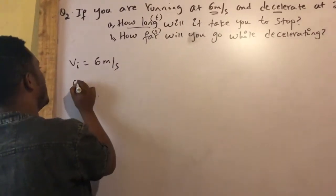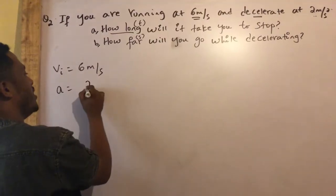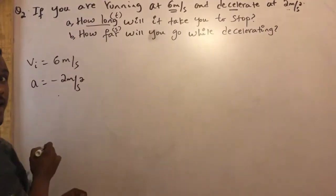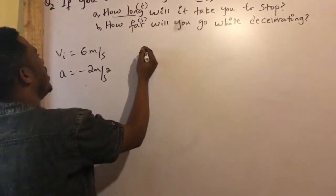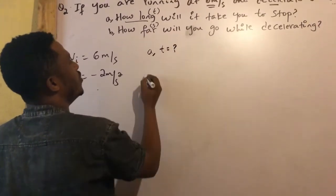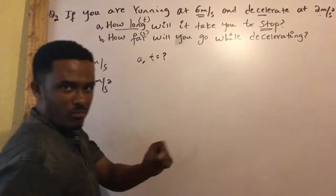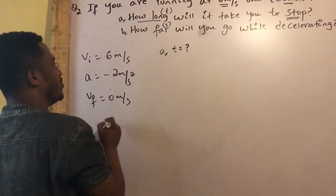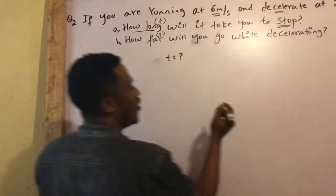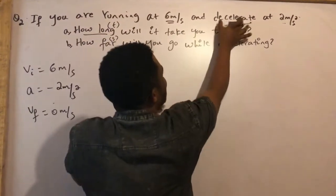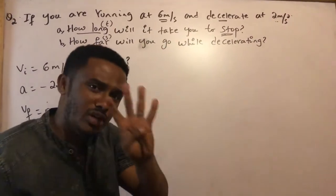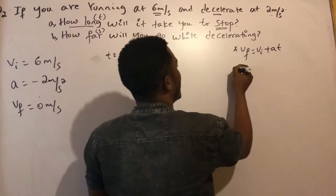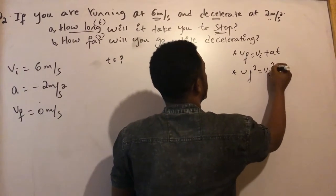Acceleration is given at 8 meters per second squared, or negative 1 meter per second squared. The speed is negative because all the time is deceleration — the acceleration is negative.